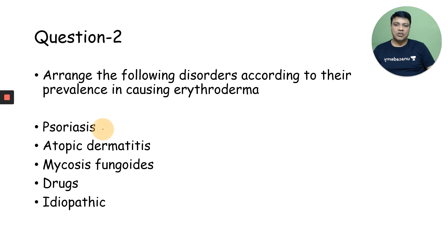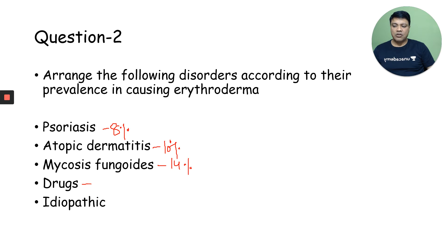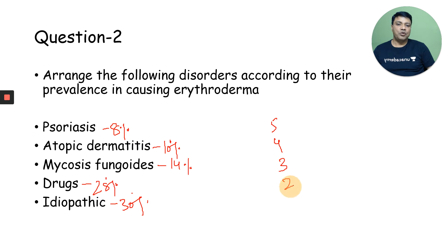Psoriasis as a cause of erythroderma is seen in 8% of patients. Atopic dermatitis as a cause of erythroderma is seen in 10% of patients. Mycosis fungoides as a cause of erythroderma is seen in 14% of patients. Drugs are a cause of erythroderma in around 28% of patients. Idiopathic causes account for around 30%. So the correct answer will be 5, 4, 3, 2, 1 — this is the arrangement of the disorders according to their prevalence in causing erythroderma.